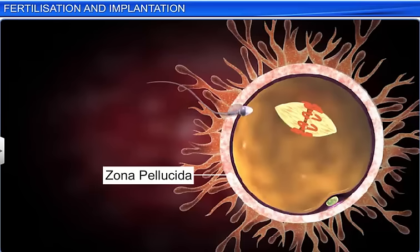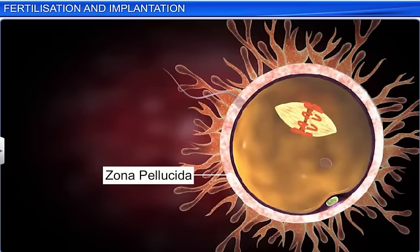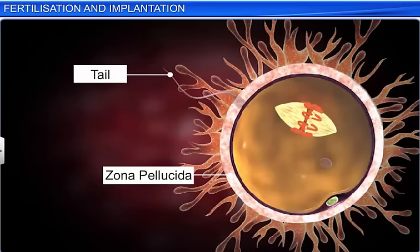After gaining entry through the zona pellucida, the acrosome present over the sperm's nucleus starts secreting enzymes that aid the sperm head to get through the ovum's cytoplasm, while the sperm sheds its tail.